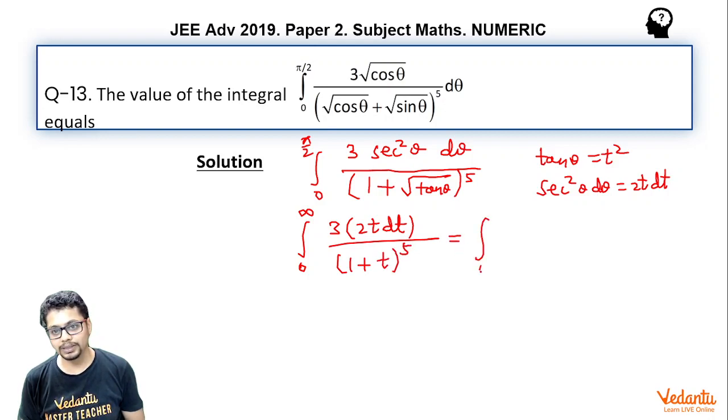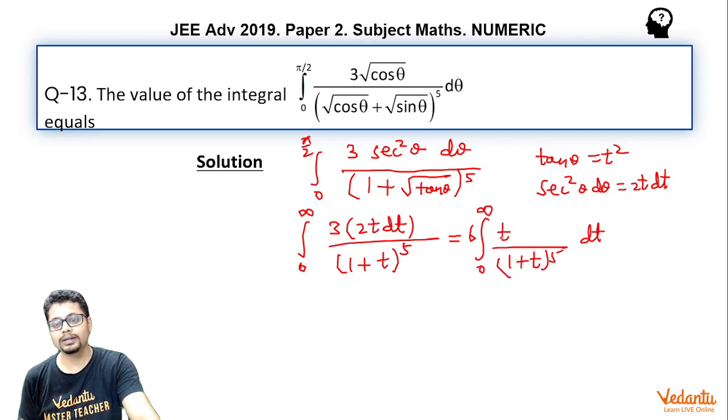So, basically, it becomes integral 0 to infinity 6 times t by 1 plus t whole to the power 5 dt. Now, the trick here is to do plus 1 minus 1.